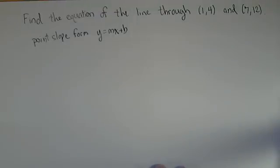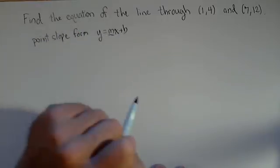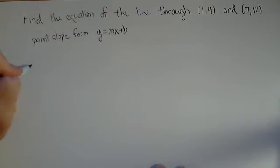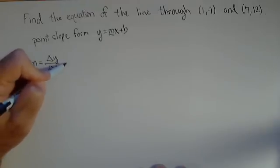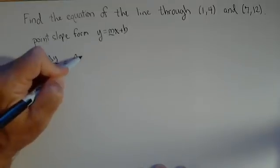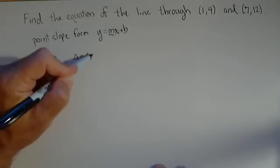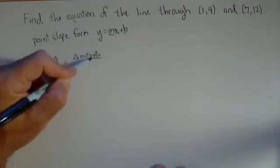So the first thing we're going to want to do is find the slope. m represents the slope in this form. And one easy way of remembering m is it's change in y over change in x, or change in outputs over change in inputs.